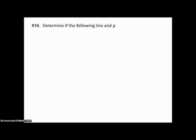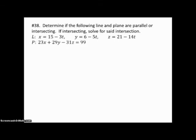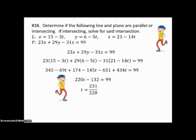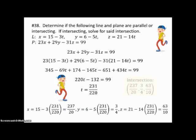Example 38: Determine if the line L (in parametric form) and the given plane are parallel or intersecting; if intersecting, find the intersection. Since x, y, and z are each expressed in terms of t, we simply substitute those expressions into the plane equation, distribute, collect like terms, and solve for t. Substituting that value of t back into the parametric equations gives our point of intersection — a single point, confirming the line passes through the plane.